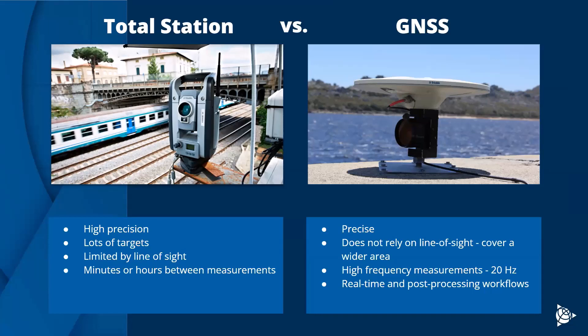Total station can also measure a lot of targets from a single location, so it's really good at measuring a smaller area with much denser coverage of prisms and target locations. Whereas GNSS is a single discrete point measuring one location — it won't measure 100 targets from one location, but it can measure one discrete point and cover a much wider area. Total stations are limited by line of sight; they're an optical instrument using a laser to track and record positions. GNSS uses base stations to record stable positions and error models, and you can set up a bunch of antennas covering a much wider area — total station covers maybe 1,000 meters, while GNSS can cover a few kilometers up to hundreds of kilometers, covering entire cities and states.